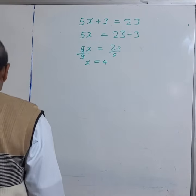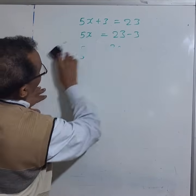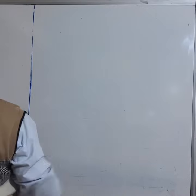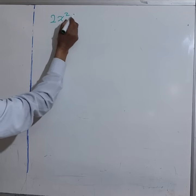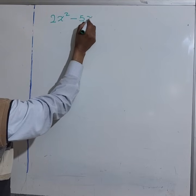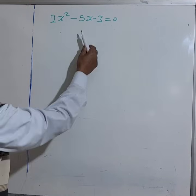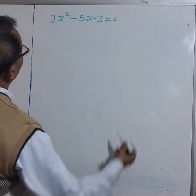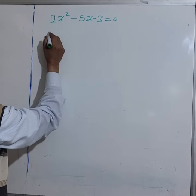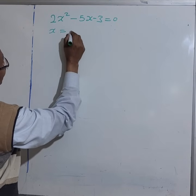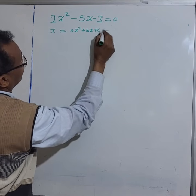So let's move to the next question. Let's do now 2x squared minus 5x minus 3 equals 0. This is a quadratic equation. The first step is to identify the coefficients using the quadratic equation, which is ax squared plus bx plus c equals 0.